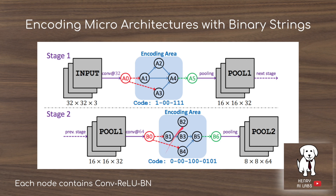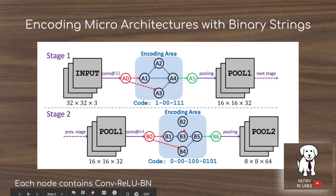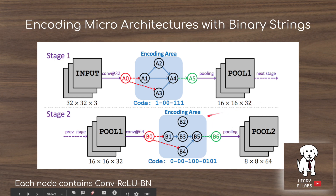In this other encoding, B2 has 0 — it doesn't have any input connections — and additionally none of the other nodes have the B2 connection. Therefore, this node is totally excluded from the convolutional cell. In this sense, the binary string in the Genetic CNN algorithm allows the network to find microarchitectures that have less complexity than the predefined parameter defining how many nodes are in the microarchitecture.